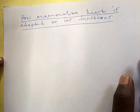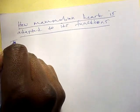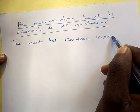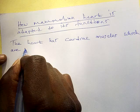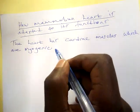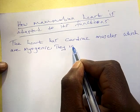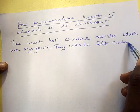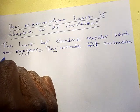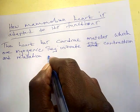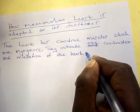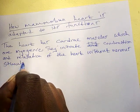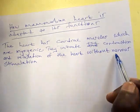Now you start like this: the heart has cardiac muscles which are myogenic. I hope you understand the term myogenic — they initiate the contraction and relaxation of the heart. That is the definition of the term myogenic: contraction and relaxation of the heart without nervous stimulation.